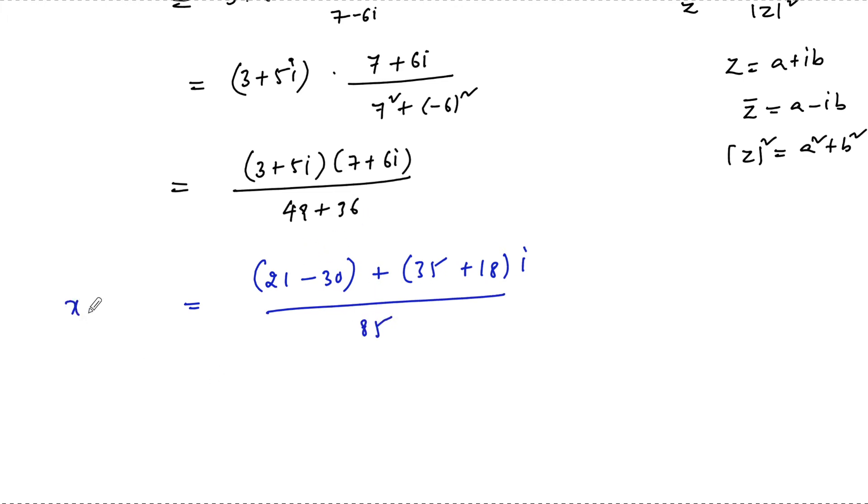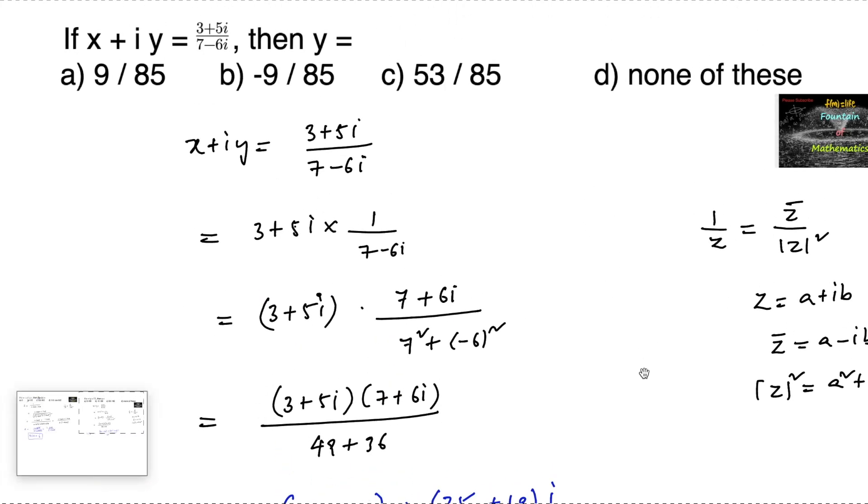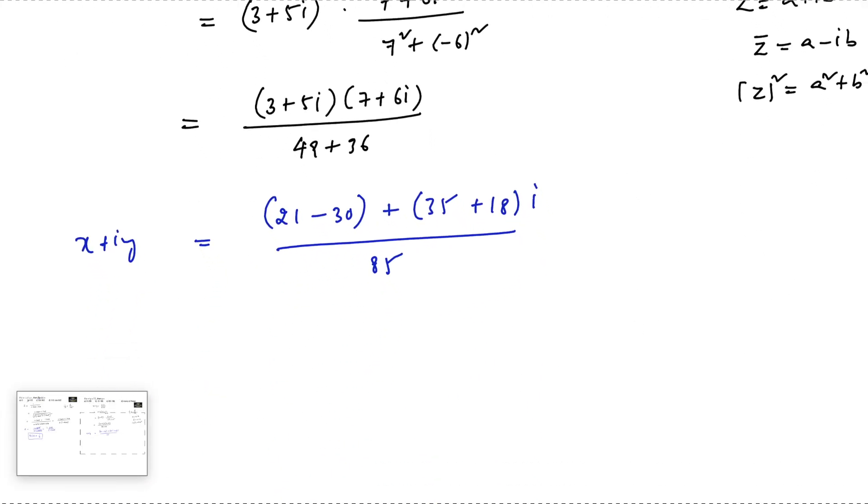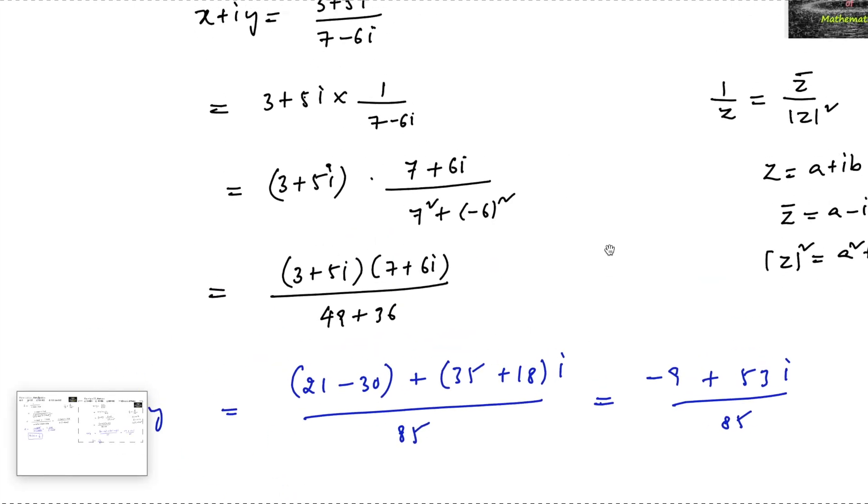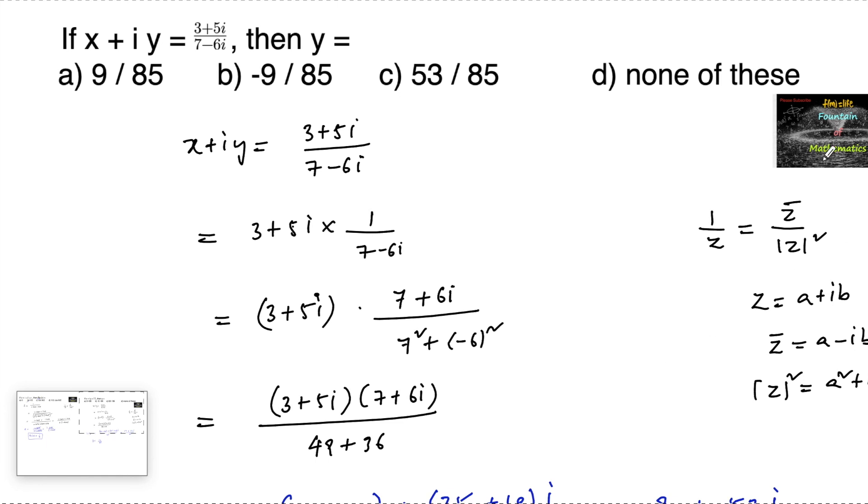Since we require only y, the imaginary part, we have 21 - 30 = -9 and 35 + 18 = 53, giving -9 + 53i over 85. Therefore, the imaginary part y = 53/85, which is option C.